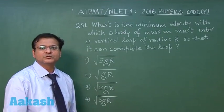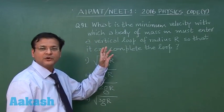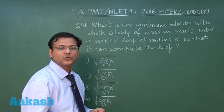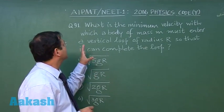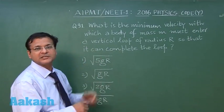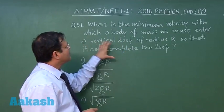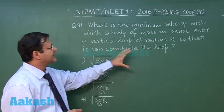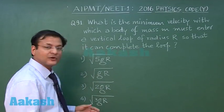Hello and welcome to Akash video solution of AIPMT NEET 1 of 2016. In this physics discussion, we have taken code Y of the question paper. In this code Y, the physics section begins with question 91. The first question, question 91, reads: What is the minimum velocity with which a body of mass M must enter a vertical loop of radius R so that it can complete the loop?